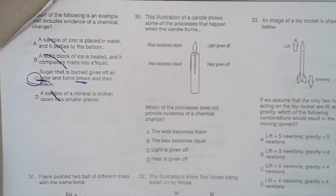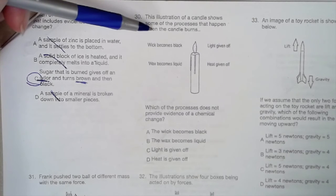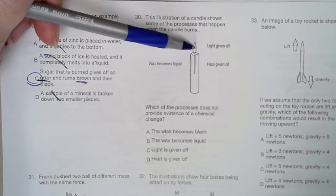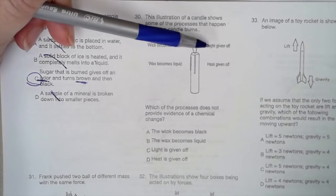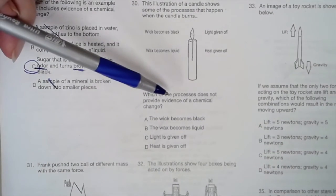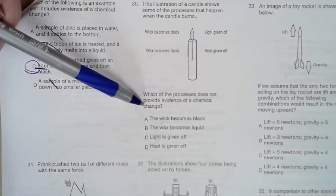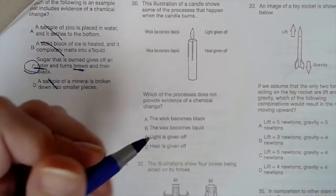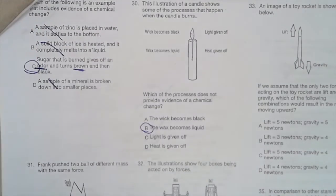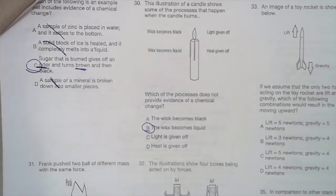Number 30. The illustration of a candle shows some of the process that happens when the candle burns. The wick becomes black. The wax becomes a liquid. Light and heat are given off. Which of the processes does not provide evidence of a chemical change? We actually discussed this. The one that's not chemical is the wax melting. When you change from a solid to a liquid, it's still a physical change. But changing color and giving off light and heat are chemical changes.